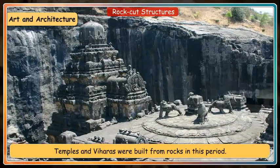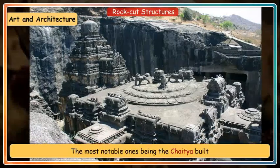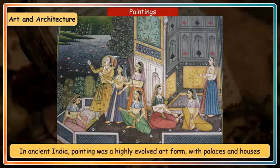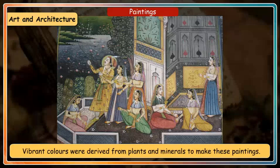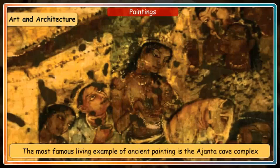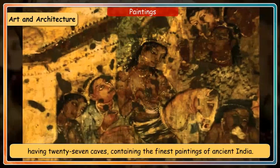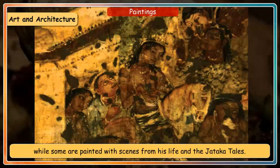Temples and viharas were also built from rocks, the most notable being the Chaitya built at Karle and the cave temple of Ellora. In ancient India, painting was a highly evolved art form, with palaces and houses of rich people having beautifully painted murals on them. Vibrant colors were derived from plants and minerals. The most famous living example of ancient painting is the Ajanta cave complex, having 27 caves containing the finest paintings of ancient India. Some caves have esoteric images of the Buddha, while others are painted with scenes from his life and the Jataka tales.